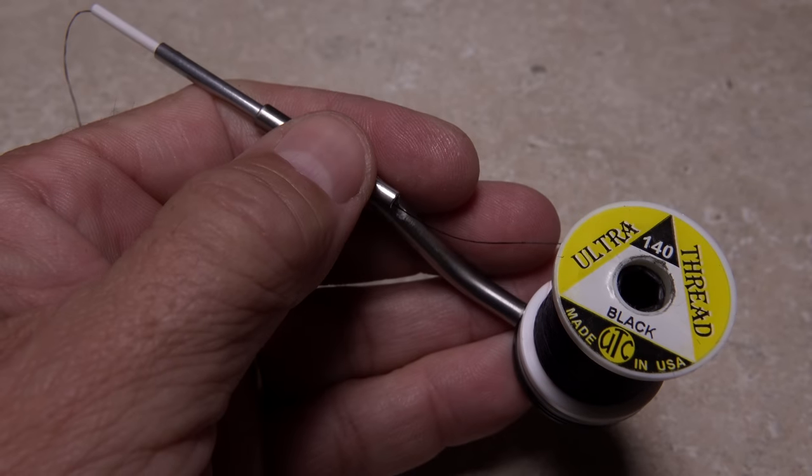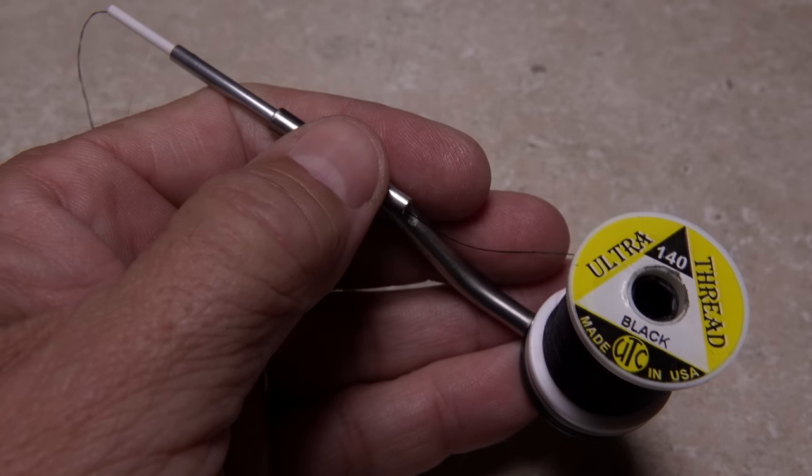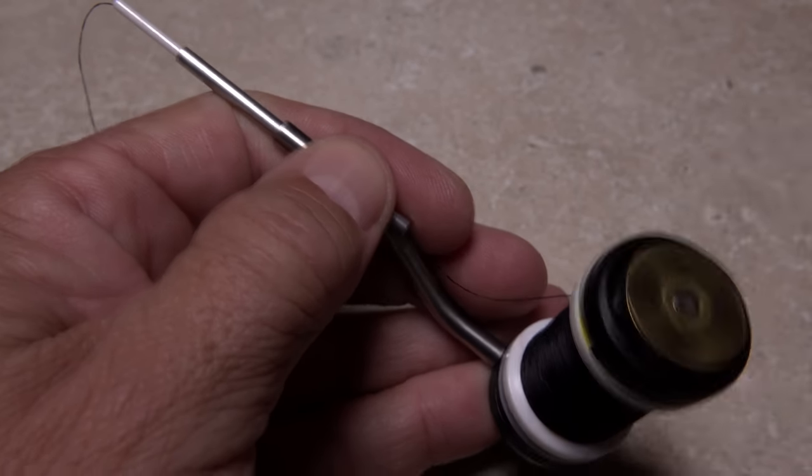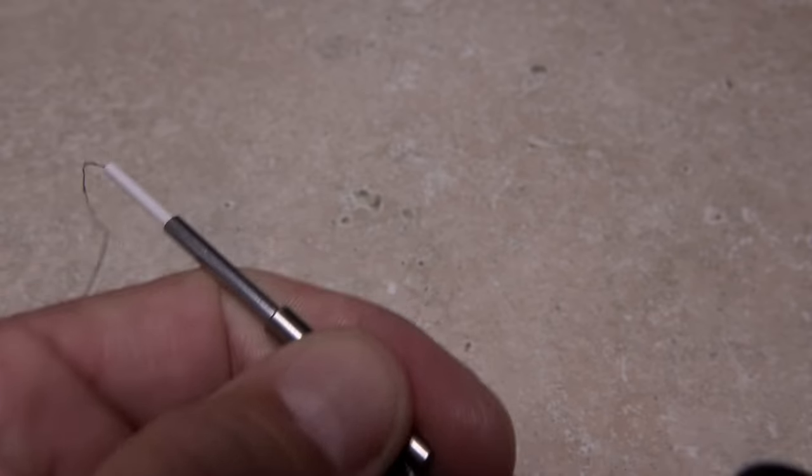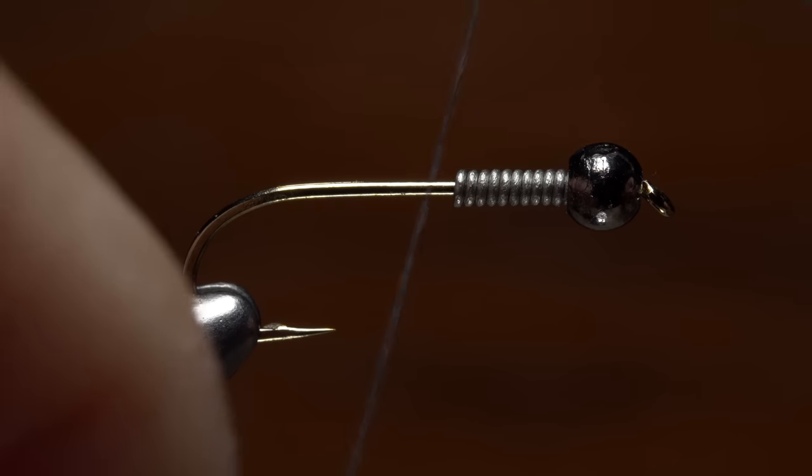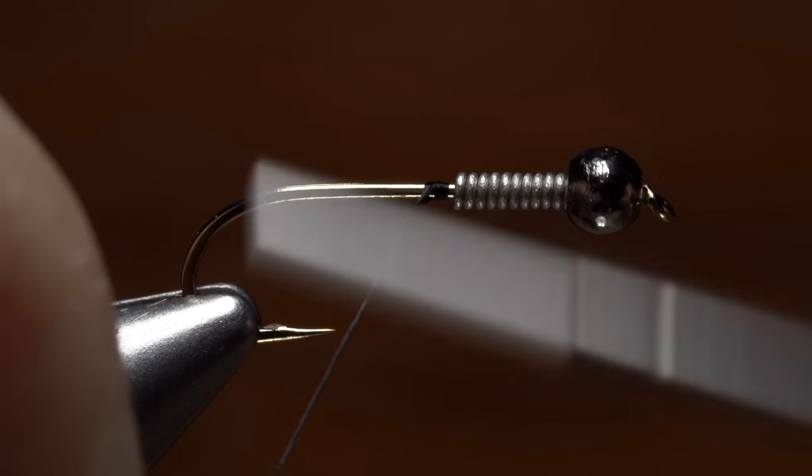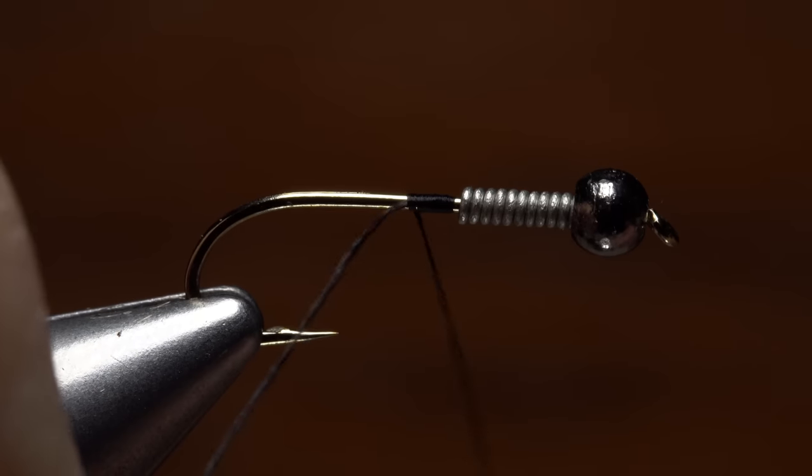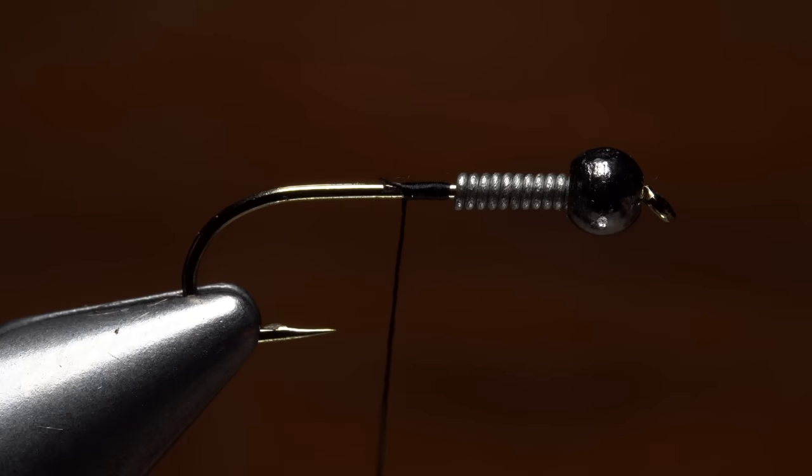For thread, I like UTC 140 denier in black. A bobbin with an extra long tube allows you to add a good bit of pressure to your thread wraps. Start the thread on the hook shank behind the weight and take a few wraps rearward before snipping or breaking off the tag.